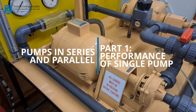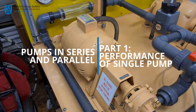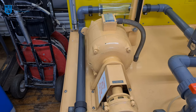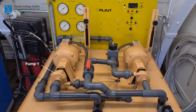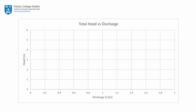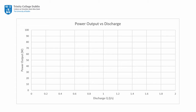Part 1: Performance of a Single Pump. In this experiment, we will investigate the performance of a single centrifugal pump under a variety of flow rates and speeds. The relationship between pressure, i.e. the head difference H, and the flow rate Q, will be observed. For a number of different pump speeds N, the power output P will also be observed at various flow rates.